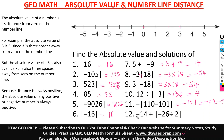Here it says negative 14 plus the absolute value of negative 26 divided by 2. Negative 26 divided by 2 gives us negative 13. The absolute value of negative 13 is 13. So we have negative 14 plus 13, which gives us negative 1.